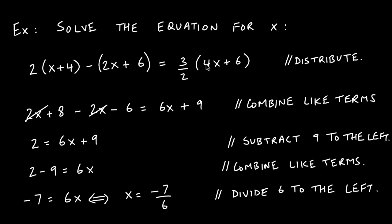The 2 goes into itself once, 2 goes into 4 twice, and 2 times 3 gives us 6x. Similarly, multiplying 3/2 by 6: 2 goes into itself once, 2 goes into 6 three times, and 3 times 3 gives us 9. So now we're left with 2x + 8 − 2x − 6 = 6x + 9.